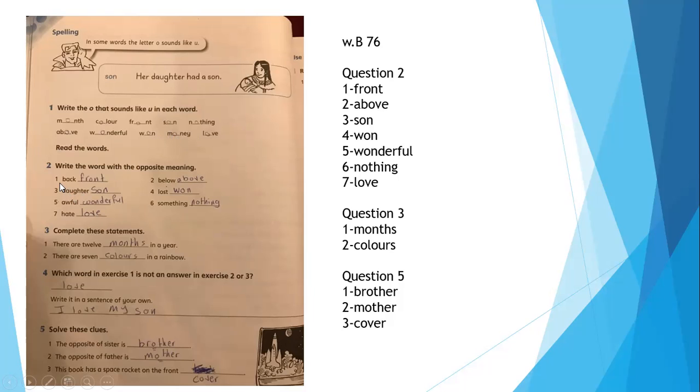Here, this question is important. Write the word with the opposite meaning. Front, below is above. Daughter, son. Lost, won. Awful, wonderful. Something, nothing. And love and hate.